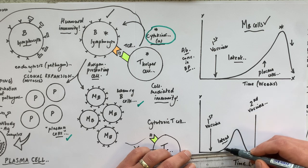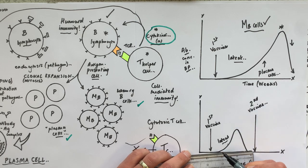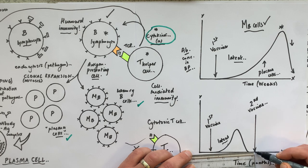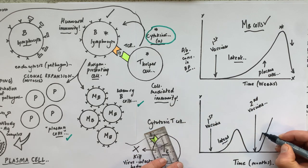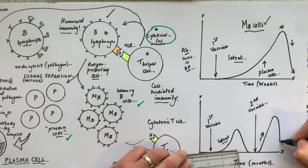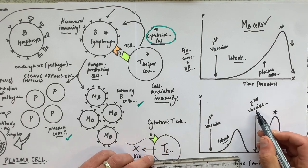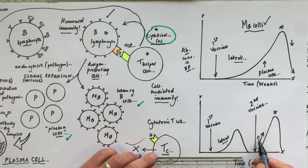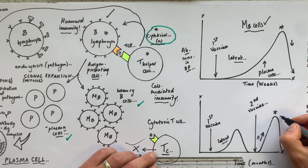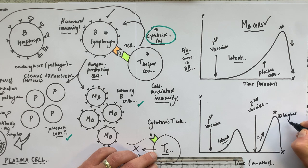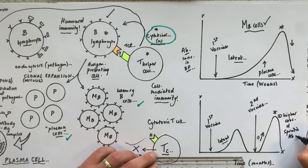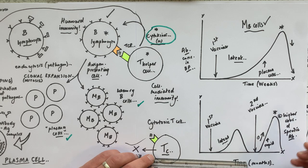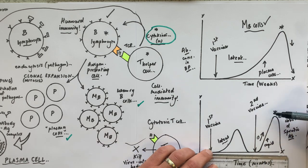After the second injection, there is a steeper gradient, a more rapid increase in antibody concentration, and a higher peak. So there are two key differences: more rapid production of antibodies in the blood plasma compared to the first injection, and a higher concentration of specific antibody.